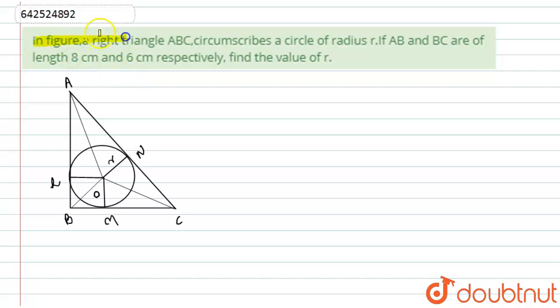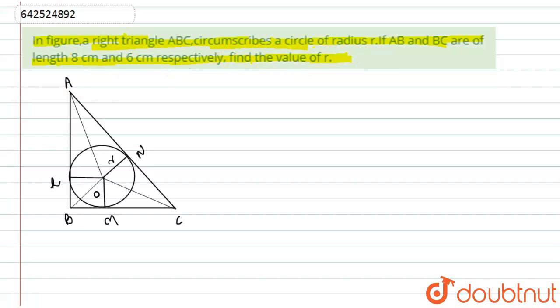Hello students, let us start with the question. Here we have given in the figure a right angle triangle ABC circumscribing a circle of radius r. If AB and BC are lengths of 8 centimeters and 6 centimeters respectively, then find the value of r.